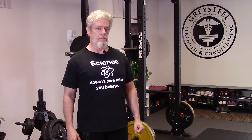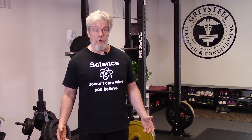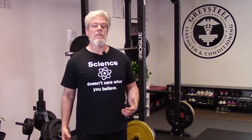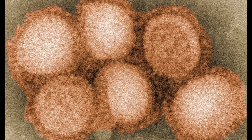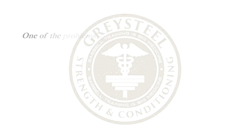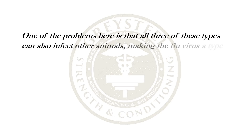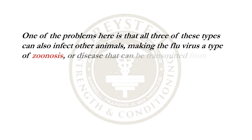Every year, flu burns across our planet, spread by coughing, sneezing, and personal contact, infecting up to 5 million people and killing up to half a million — particularly the very young, the elderly, pregnant women, and people with chronic health problems. It's a big deal. The flu is not a severe cold. It's caused by one of several strains of influenza virus, a family of RNA viruses of which three types can infect humans: A, B, and C. All three types can also infect other animals, making the flu virus a type of zoonosis — a disease that can be transmitted from critters to people.